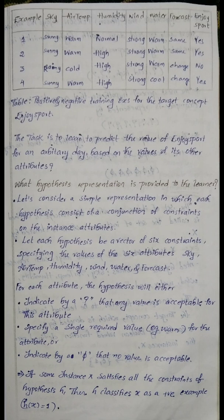On the other hand, for a negative example with attributes rainy, cold, high, strong, warm, change — this is not satisfied — so h(x) = 0.